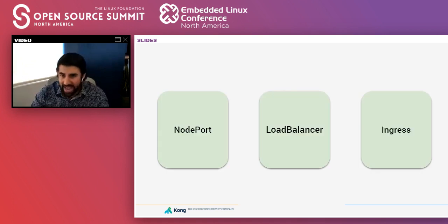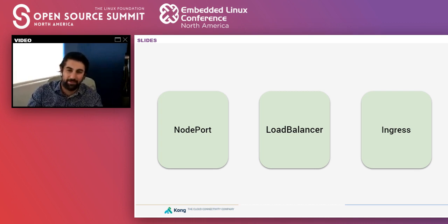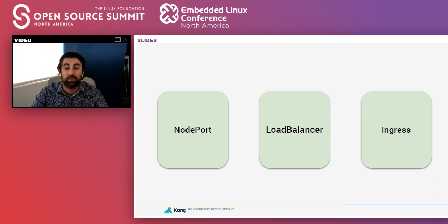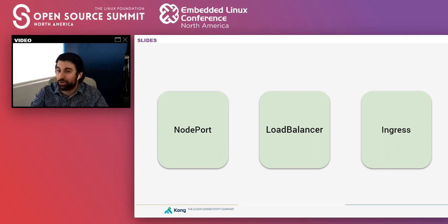There are three different ways — actually a fourth way which is kube-proxy, but I won't cover that today — primarily three ways we can access our services from the outside using Kubernetes. We can configure a node port, we can configure a load balancer, or we can configure an ingress. Let's go through all of them and deep dive into why ingress seems to be the best way to allow external traffic to enter our Kubernetes cluster.